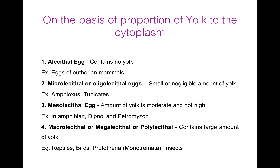Eggs are of different types. We will see in later slides that eggs can be divided on the basis of proportion of yolk to the cytoplasm, on the basis of distribution of yolk, on the basis of shell, and on the basis of developmental determination. First of all, we will see classification on the basis of proportion of yolk to the cytoplasm.